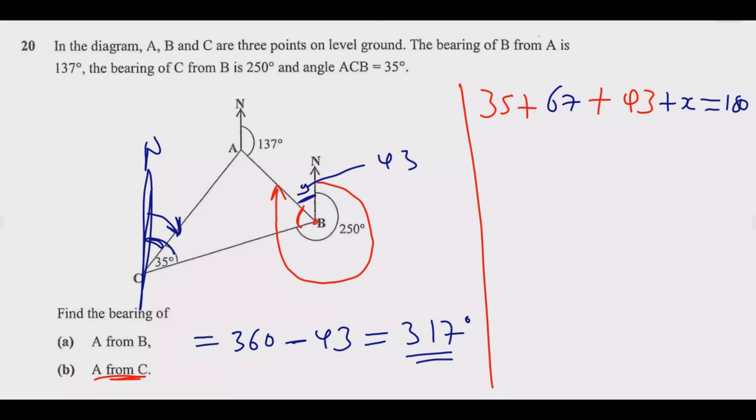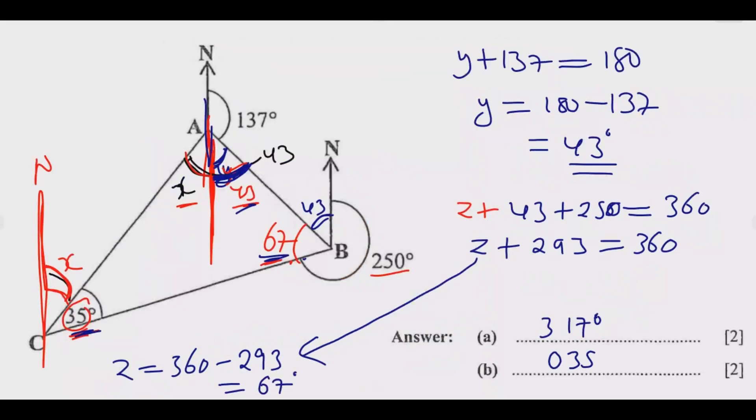So 35 plus 67 plus 43 plus x must equal 180. So I'm adding 67, 35, 43, and x. If you're adding these, I'm going to get 70 plus 35, which is 145 plus x equals 180. So x is equal to 180 minus 145, so x is equal to 35 degrees. If I stand at C then turn 35 degrees to look at A, hence the bearing of A from C is 035 degrees.